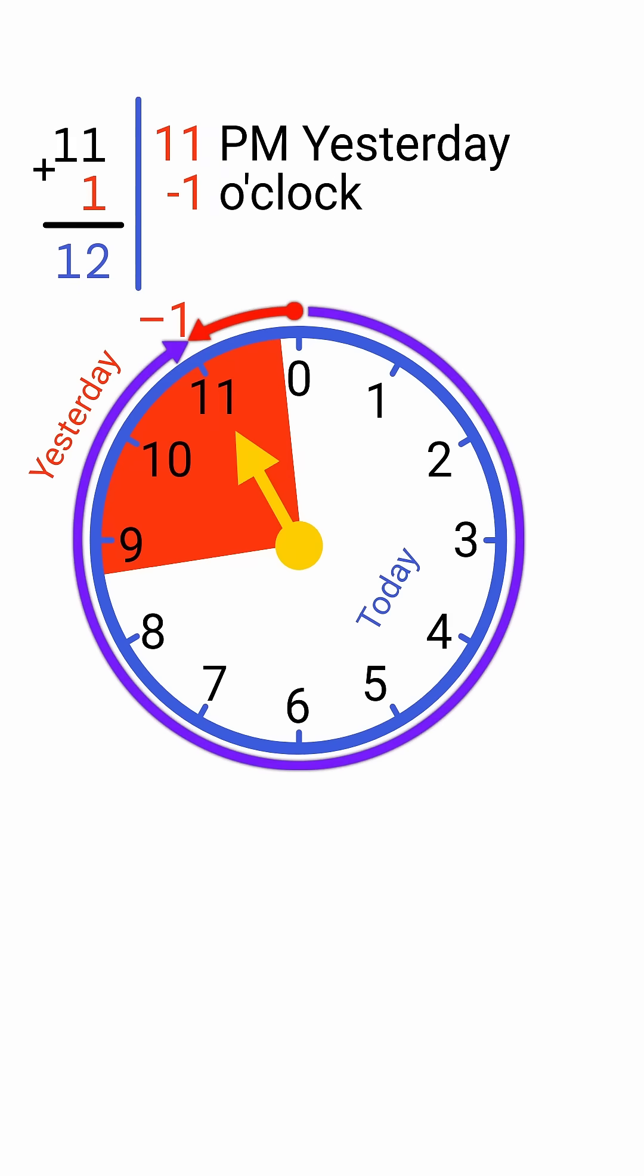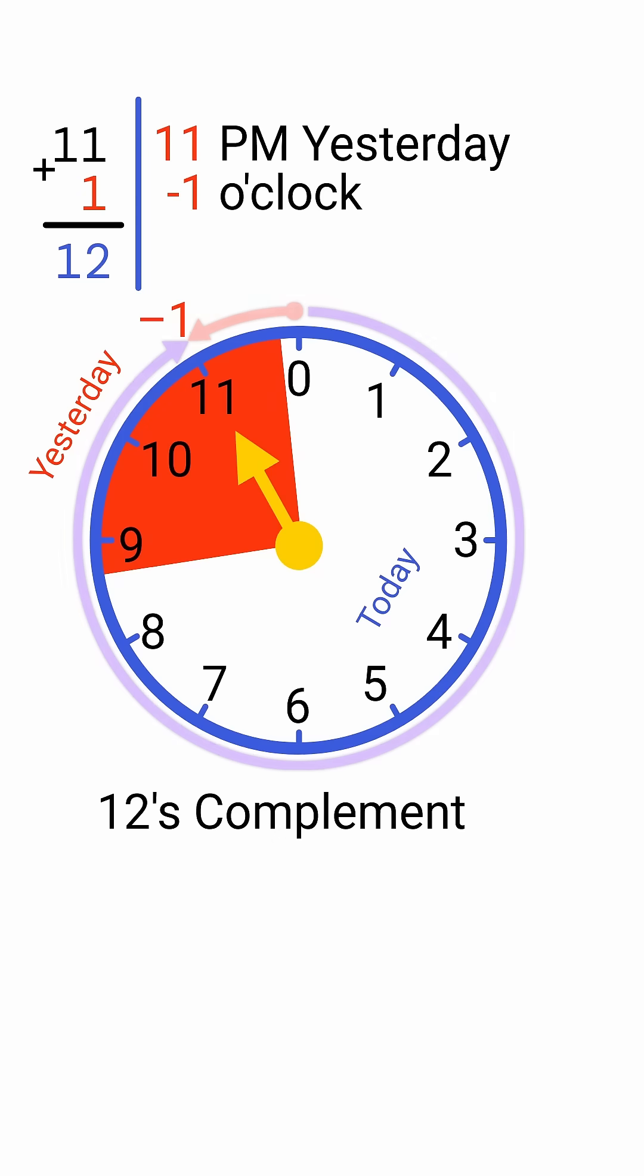In other words, 11 and 1 complement each other to make 12. We can say that 11 is the 12's complement of 1. We can now apply this rule, 12's complement, to find any negative time on the clock.